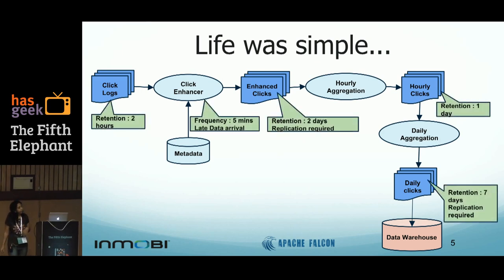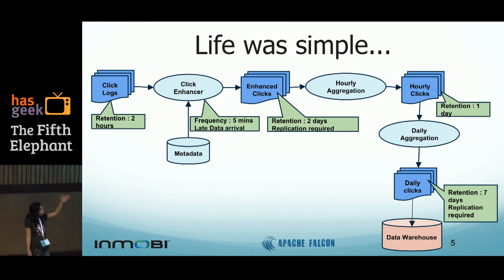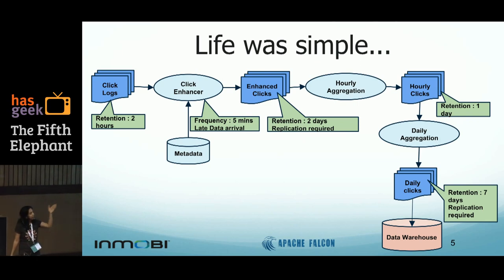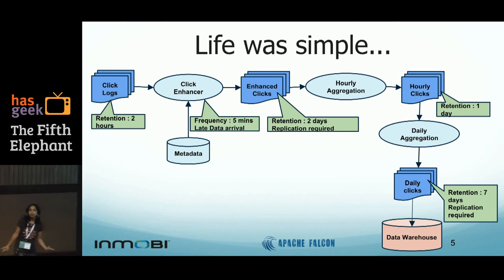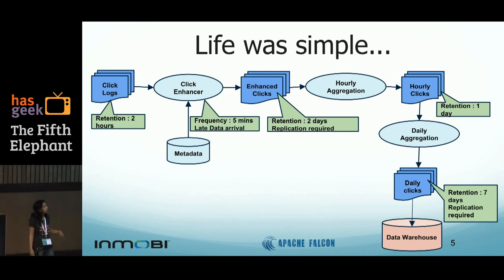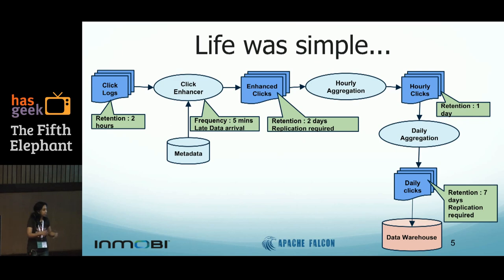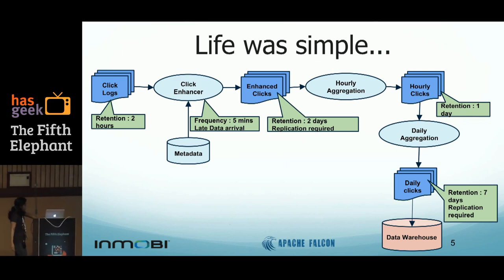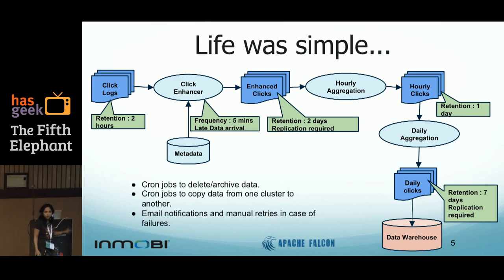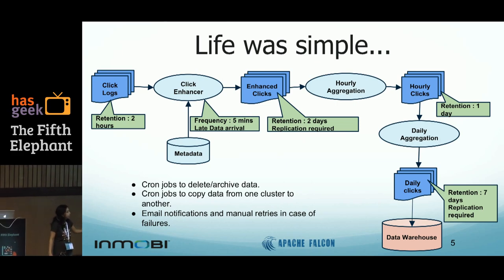But there were a few requirements beyond the standard pipeline. As data flowed through the pipeline you had to control when these jobs ran — the hourly jobs ran every hour, the daily ones every day. You did not want to keep data around all the time, for storage and compliance reasons. Each dataset had different retention requirements, and there were replication needs also. All of this was solved in the beginning simply with cron jobs — a bunch of cron jobs to schedule, delete, and replicate data.